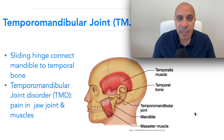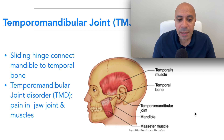Before we do that, we need to understand what the temporomandibular joint is and how it works. The joint is actually a sliding hinge connecting the mandible — this is the mandible bone here — to the temporal bone. You can see the joint is located in front of your ear.